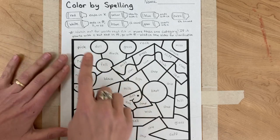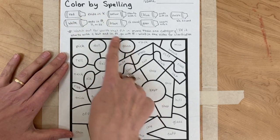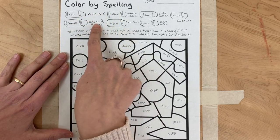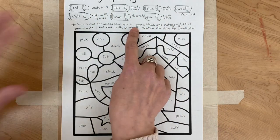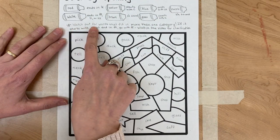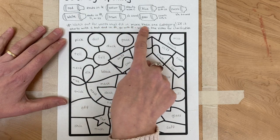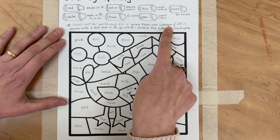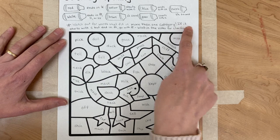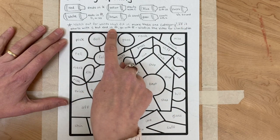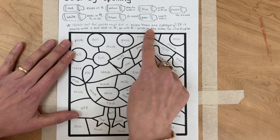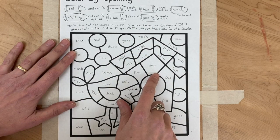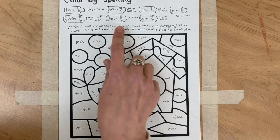I've asked you to color different words depending on what spelling rule they follow, and some of them I wrote here: watch out for words that fit in more than one category. I have an example: if it starts with C but ends in FF, go with FF. I said to watch the video because I want to talk about this more, so let's go over what the different things are.